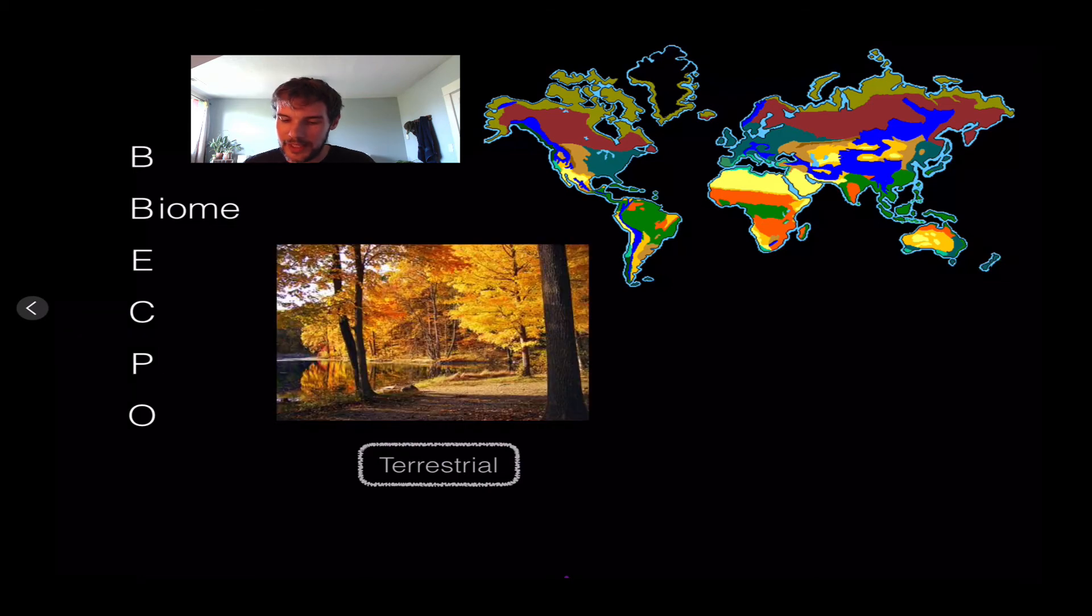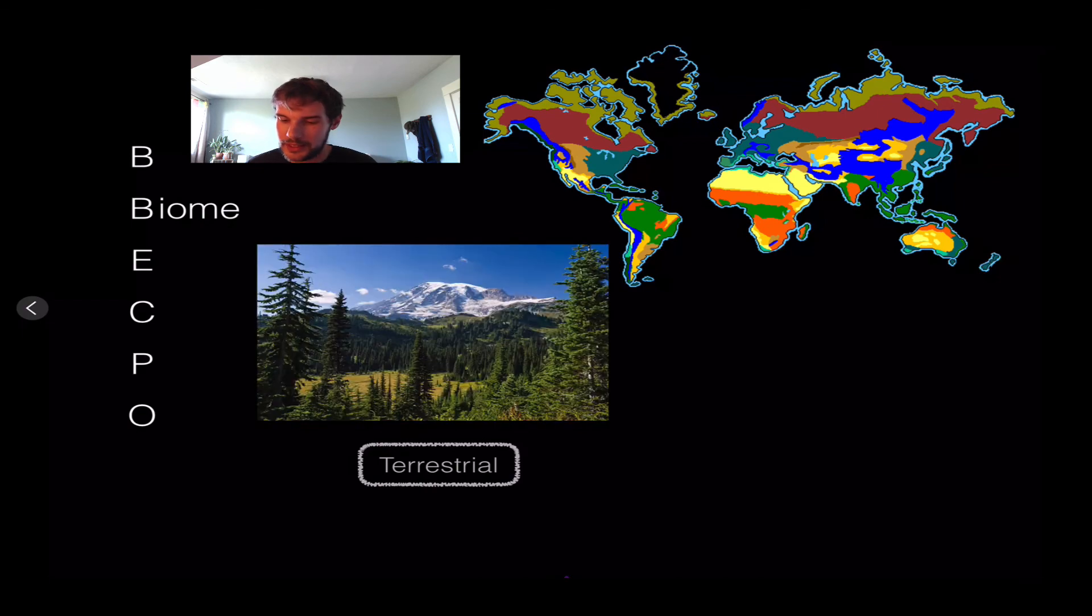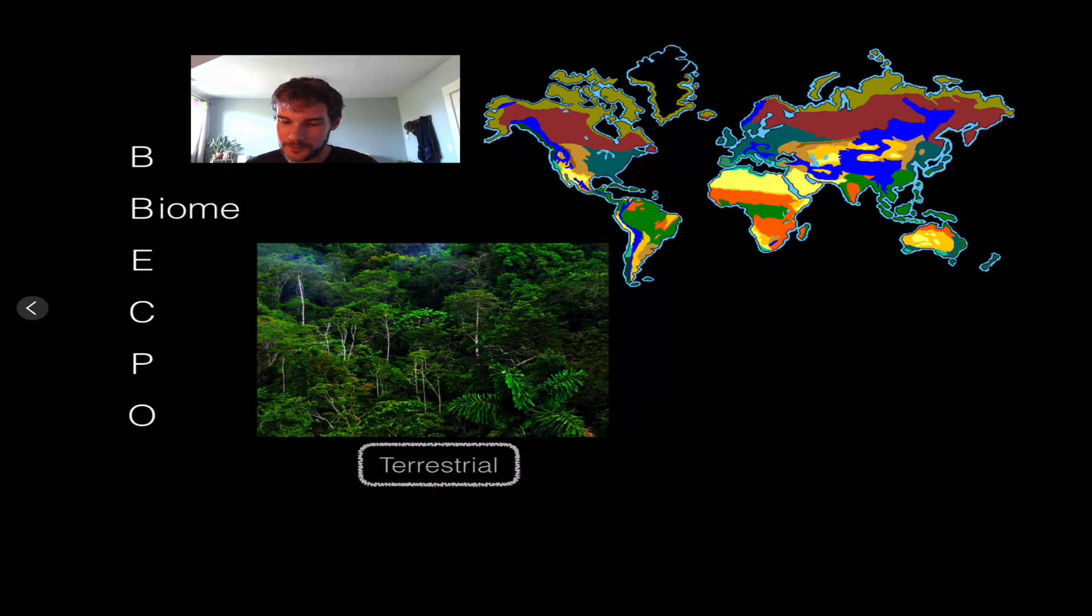Deciduous forests, like the large one on the eastern coast, and coniferous forests, which indicate wet conditions and cold winters. Lastly, tropical areas have warm weather and lots of precipitation per year.